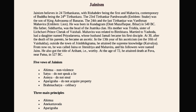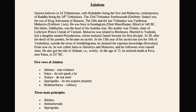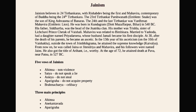Mahavira also received the title of Arihanth. At the age of 72, he attained death at Pava near Patna in 527 BC. The five vows of Jainism are: Ahimsa (non-violence), Satya (truth), Asteya (do not steal), Aparigraha (do not acquire property), and Brahmacharya (celibacy).